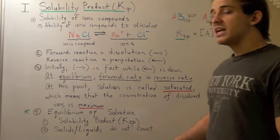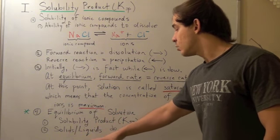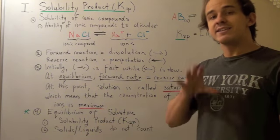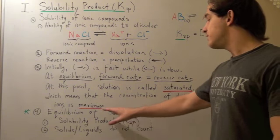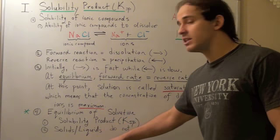When we determine the normal equilibrium constant, we don't include solids and liquids in our calculation. In the same way, when we talk about solubility product constant Ksp, we don't include solids and liquids.